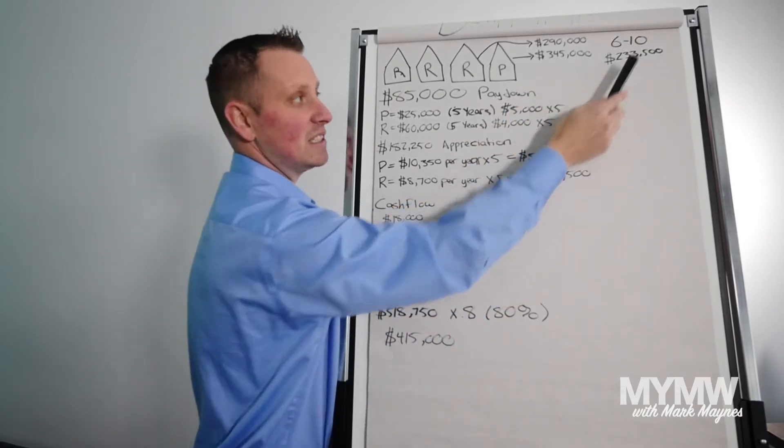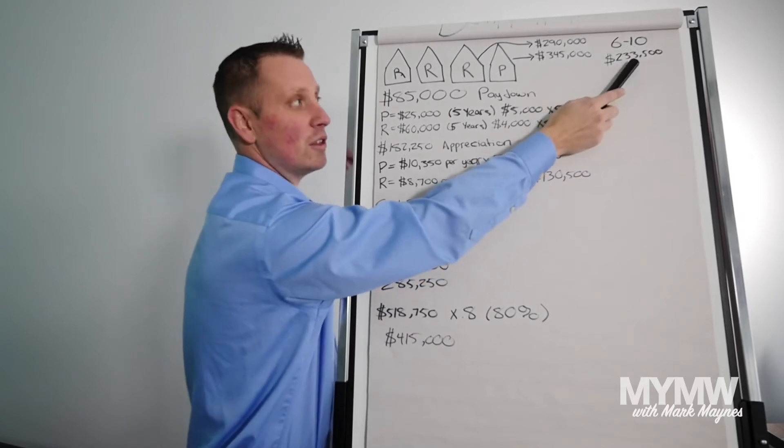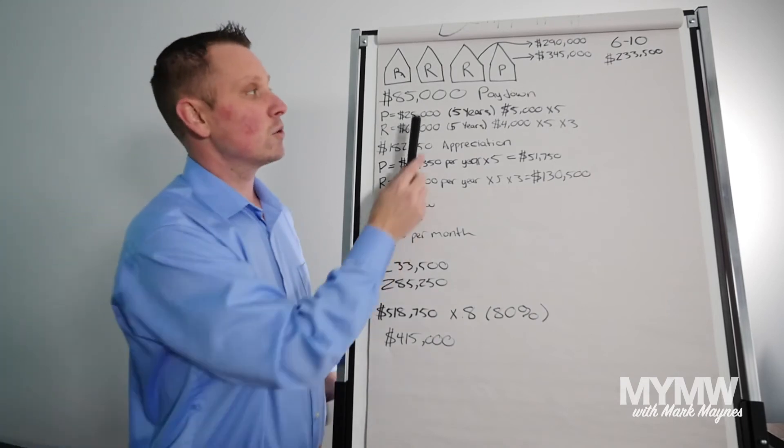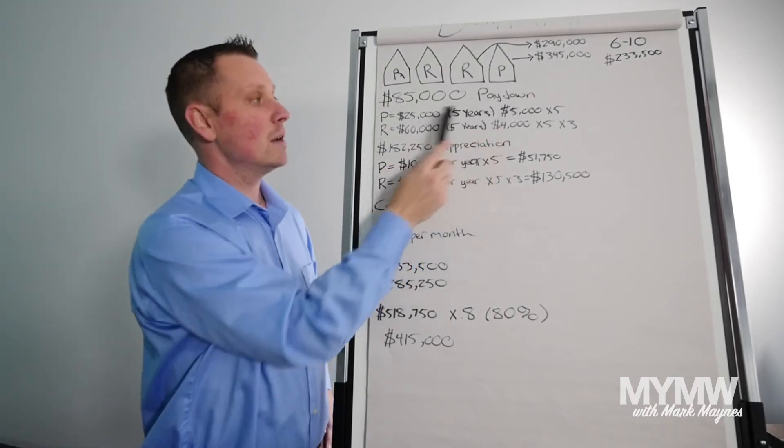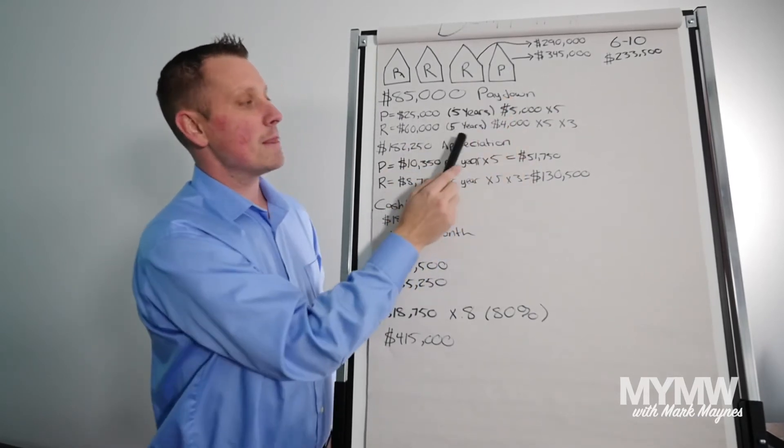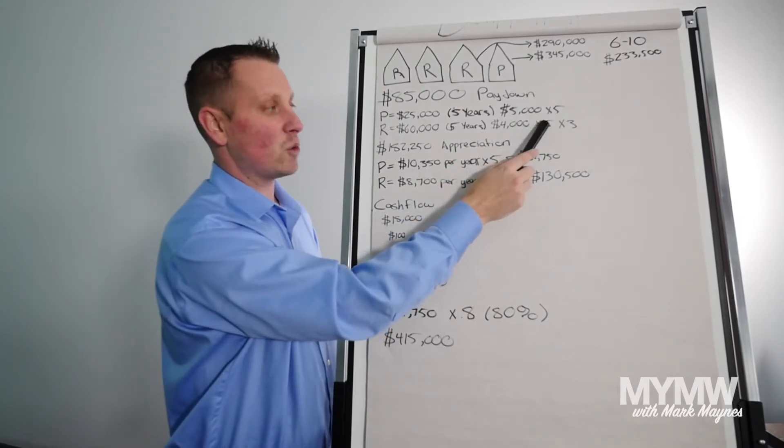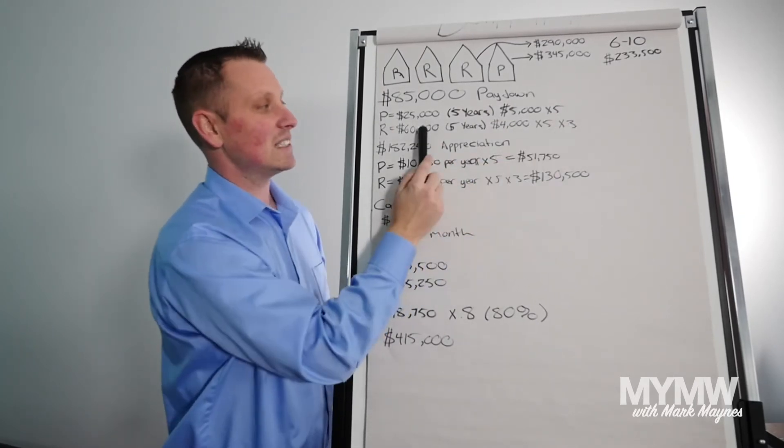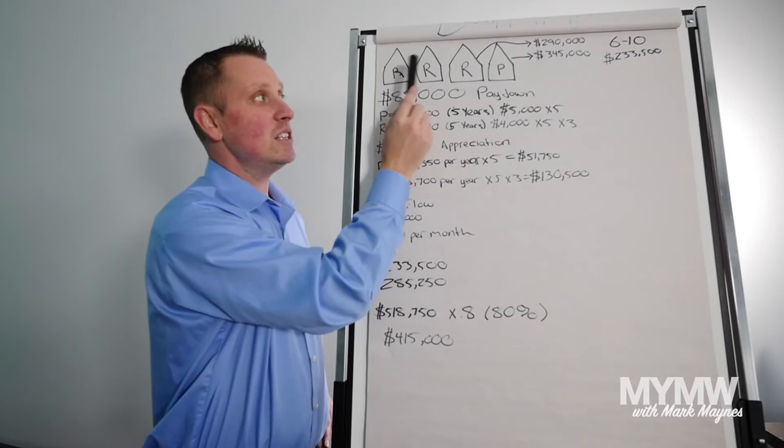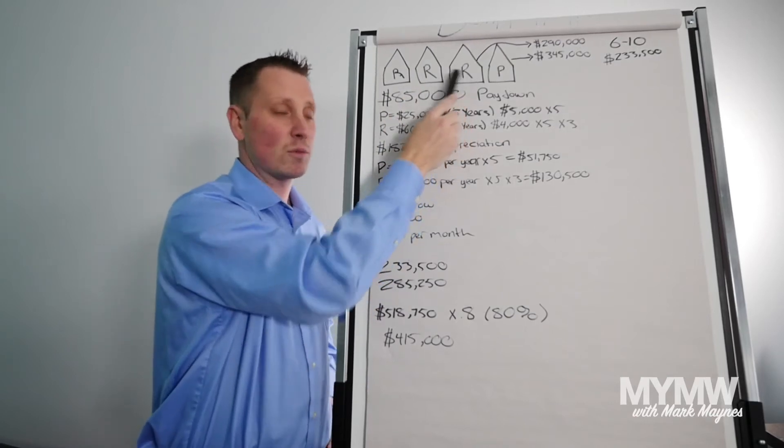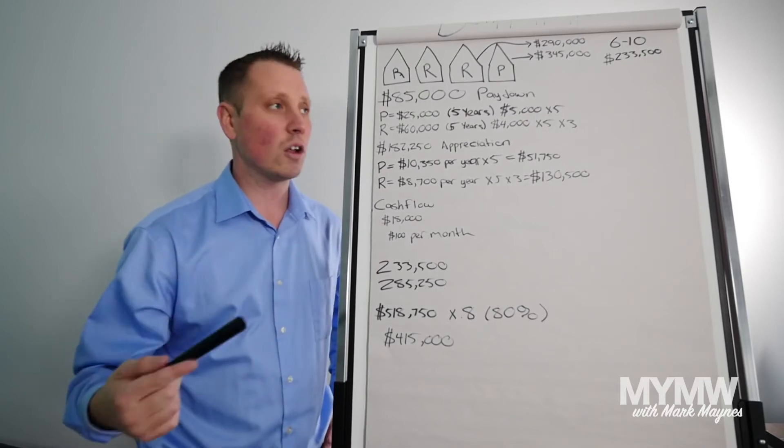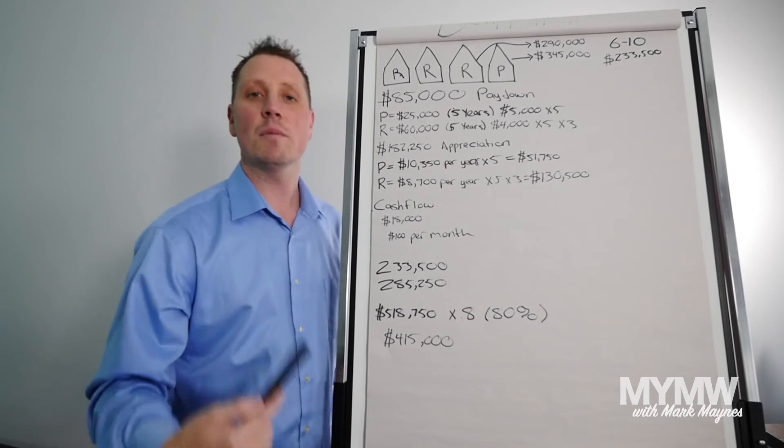So this is year six to 10 and we came in with $233,500 net worth on the properties. This time we're going to pay down $85,000 because we have $25,000 per year on the personal and $4,000 per year, which is $20,000 times three is $60,000. So we're paying down $85,000 by owning these properties. And again, you're not really going to be doing too much. Rentals are incredible. If you pick the right tenant, you don't have to do too much work. It all goes into picking the right tenant.